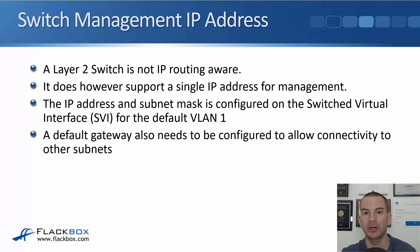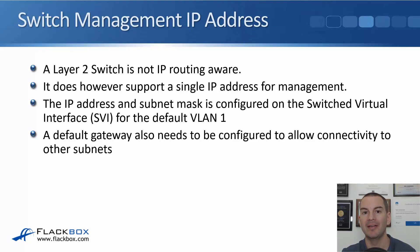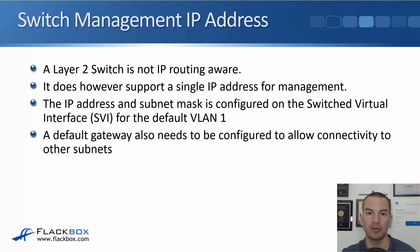Unlike on our router where we configure the IP address on a physical interface, on a layer 2 switch the management IP address goes on a VLAN interface, which is a virtual interface. When we configure our VLAN interface, that's called an SVI — a switched virtual interface — and this is going to be in VLAN 1.